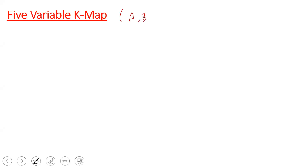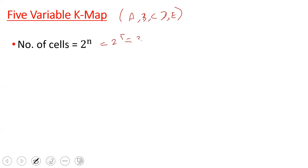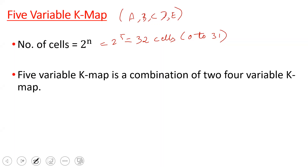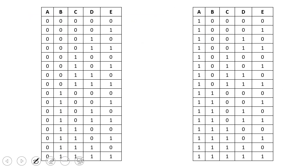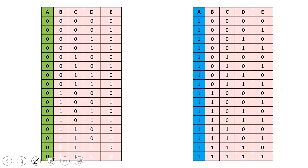For the five-variable K-map, the variables are A, B, C, D, E. The number of cells in a K-map is 2 to the power n, where n is the number of variables. So for five variables, the number of cells is 2^5 = 32. A five-variable K-map is a combination of two four-variable K-maps, each with 16 cells, giving 16 plus 16 equals 32 cells total.